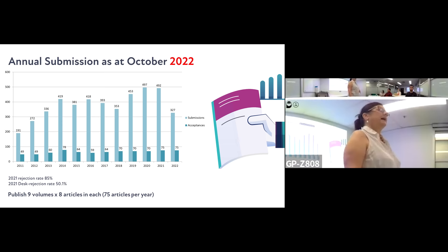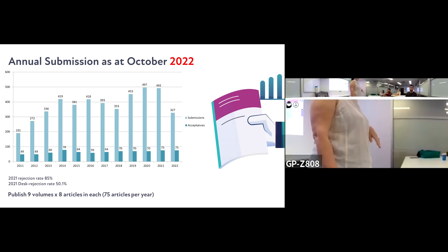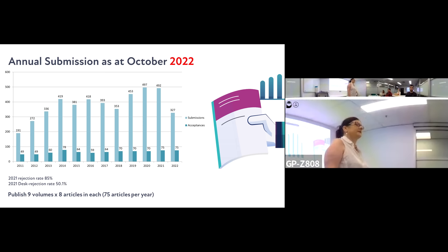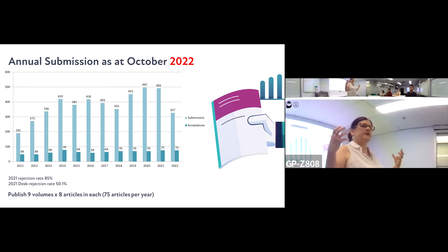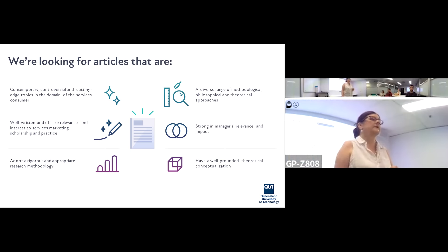Our annual submissions are rising, hovering close to the 500 mark, and I think we'll hit that this year. We publish between 70 and 75 articles a year, so the desk rejection rate is 50% and the overall rejection rate is about 85%. So if you get past the desk rejection with us, you've already got better than even odds of getting accepted.